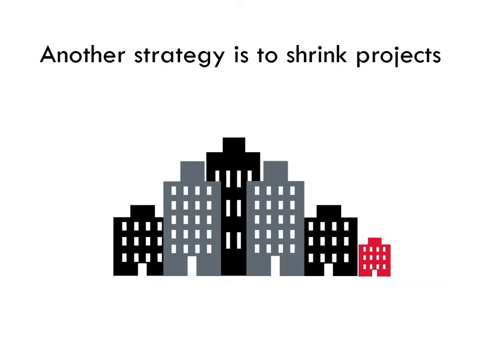Developers can use another strategy to lower mitigation costs — namely, they can shrink their projects. This is bad news because it limits the supply of new units. There are fewer new homes and offices available because we use LOS to assess new projects. To make matters worse, smaller developments also tend to have higher per-unit development costs than large projects, because the fixed costs of development are spread across a smaller number of units. Anyone who cares about housing affordability should be concerned about traffic impact analysis.